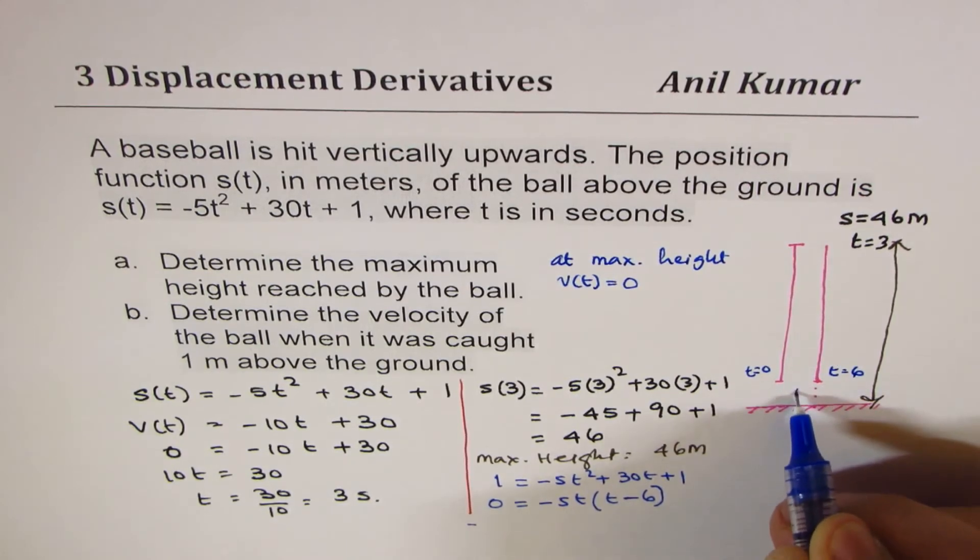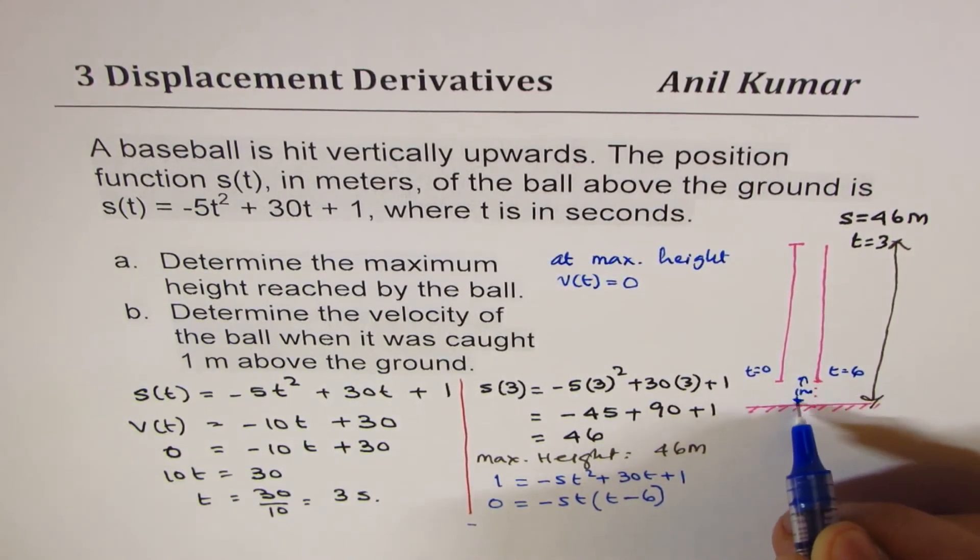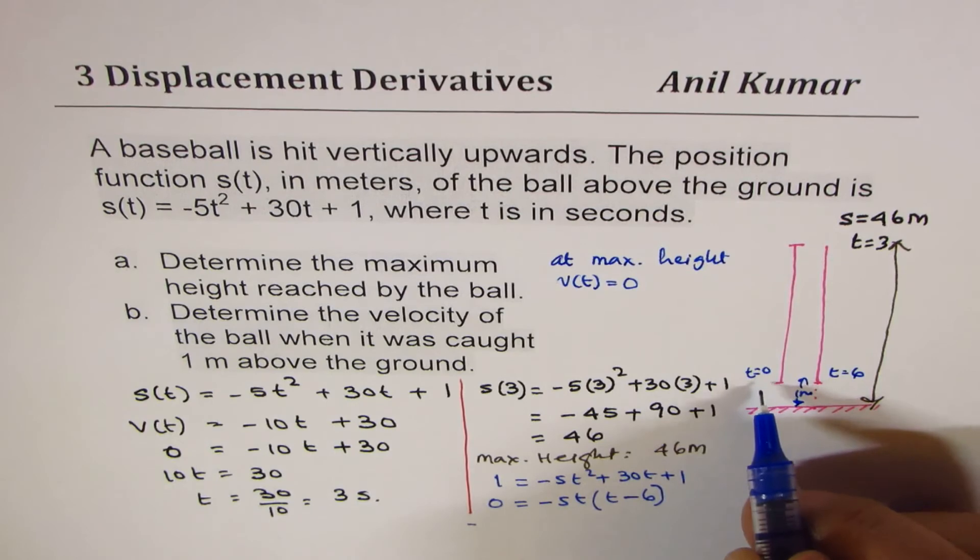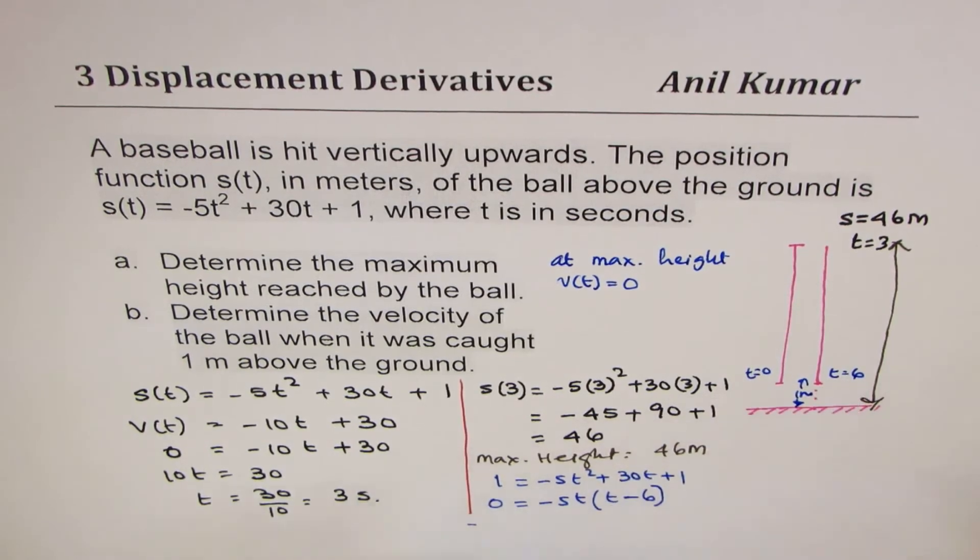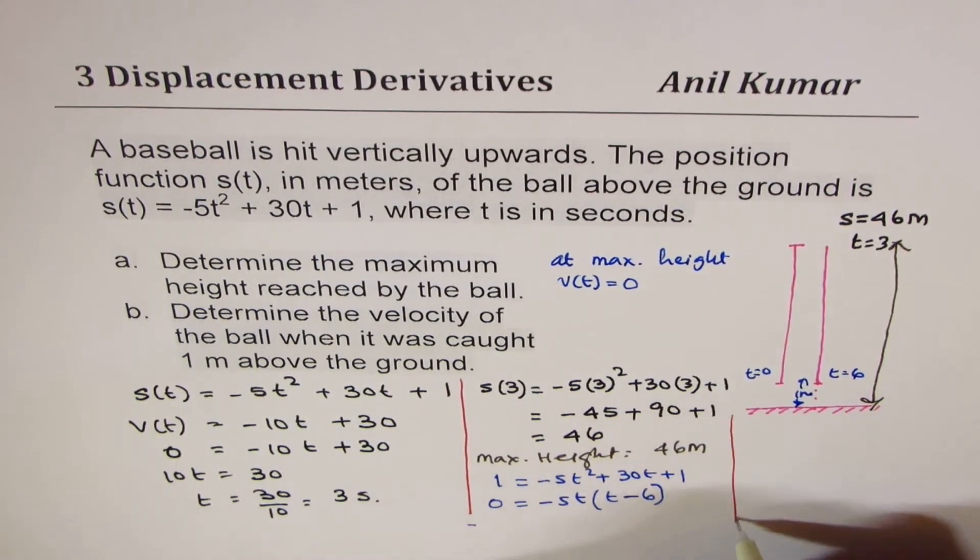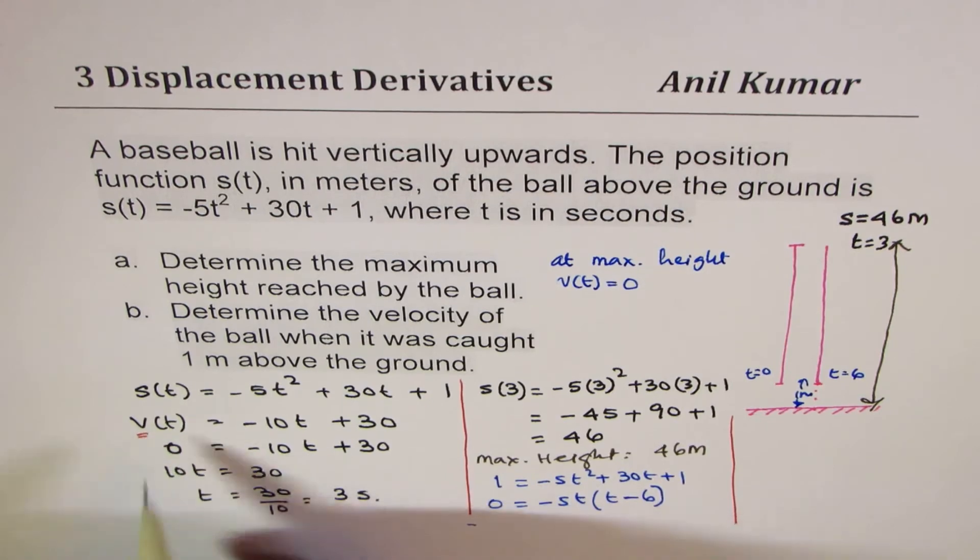Height of 1 meter is at t = 0, that is the initial position, or at t = 6. We need to find the velocity at this time, so what we will do now is substitute t in the expression for velocity.